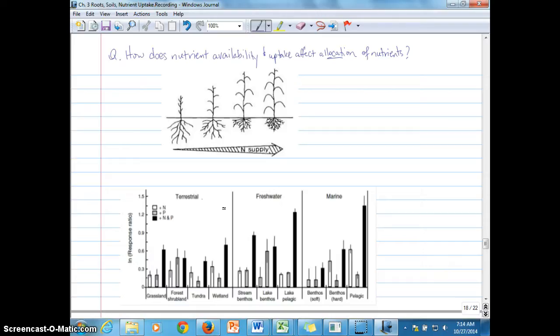And so we looked at a uniport system versus the symport system, and now we're just going to step back and look at how, once the nutrients are in the plant, how that affects where the plants go, how those nutrients are allocated, how that affects different ecosystem level dynamics as well, sort of plant and soil interactions. So we'll start with this question: how does nutrient availability and uptake affect allocation of nutrients? And by allocation we mean basically where do the nutrients go?